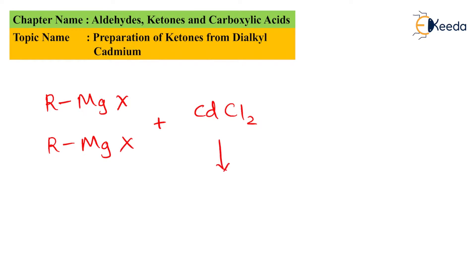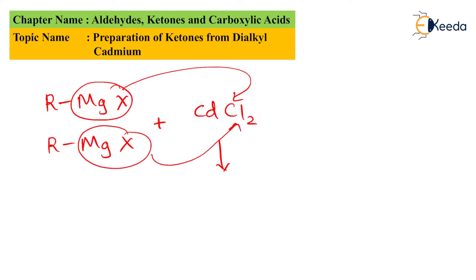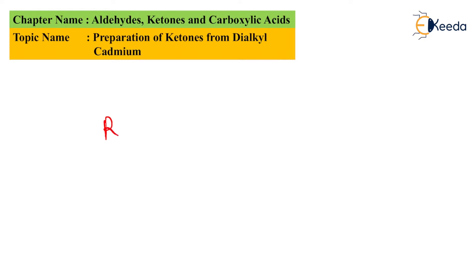The reaction proceeds such that MgX combines with one Cl and another MgX attaches to the other Cl. The byproducts obtained can be written as 2 MgClX. Therefore the product we obtain is RCdR, which is nothing but dialkyl cadmium.